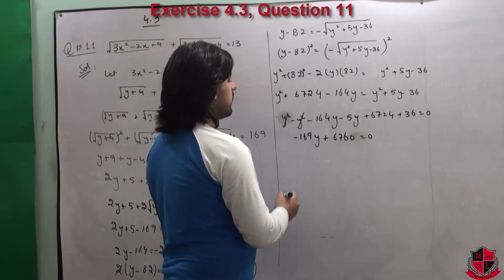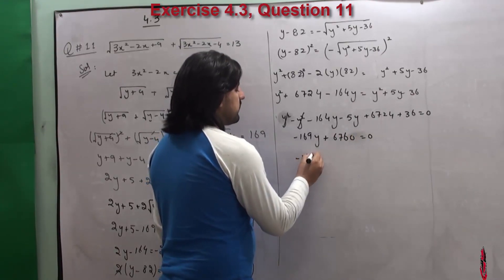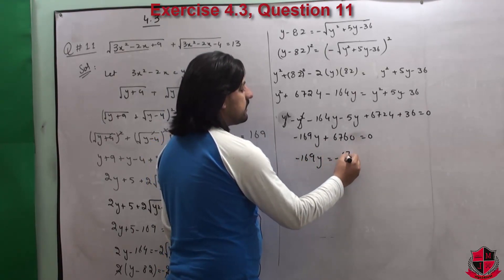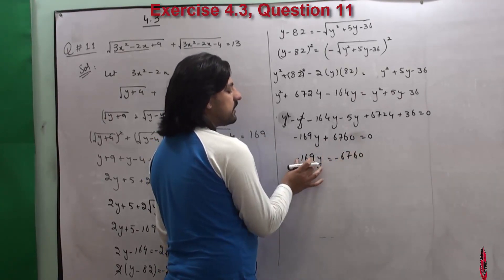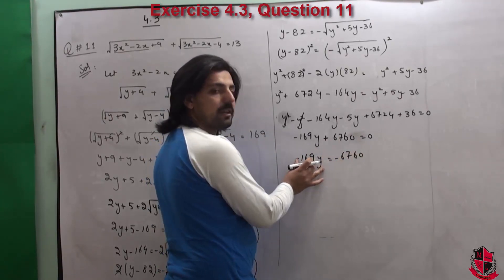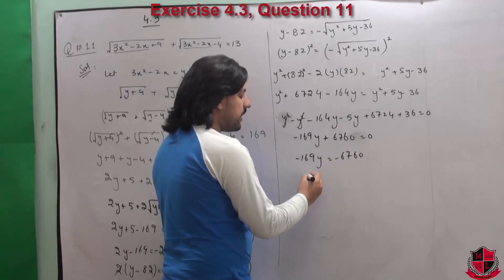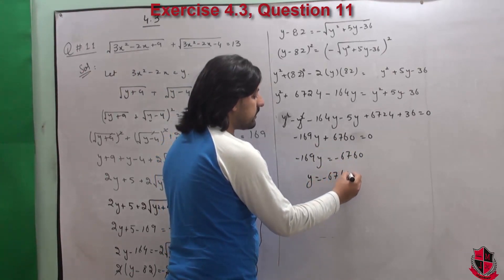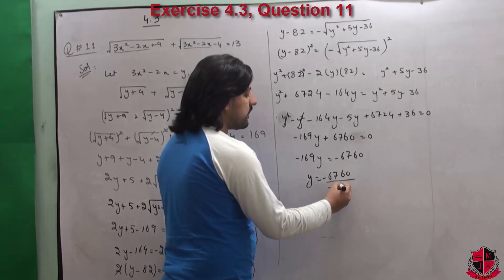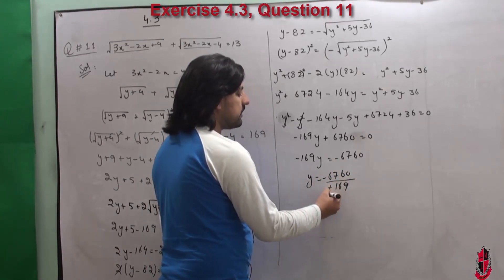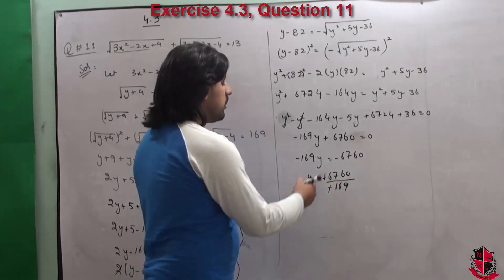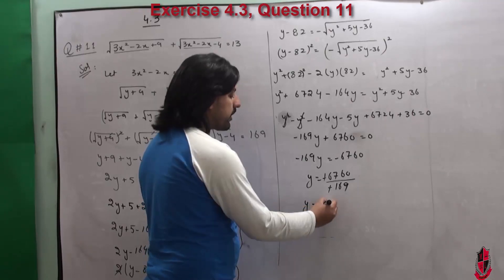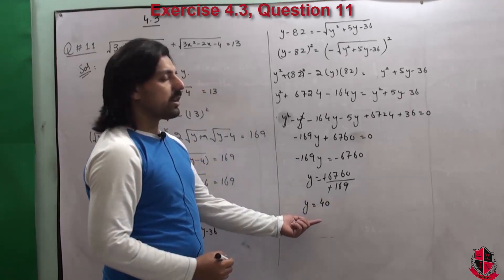Now -169y = -6760. Right पर जाके divide होगा, so y = -6760 / -169. Minus minus cancel, and dividing gives y = 40. So y = 40 — हमारे पास single solution आ जाता है।